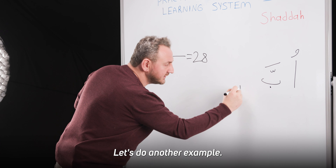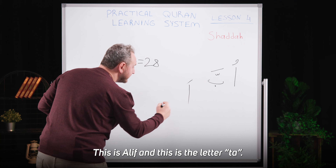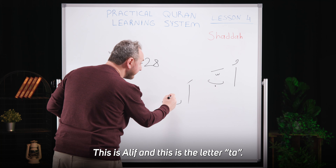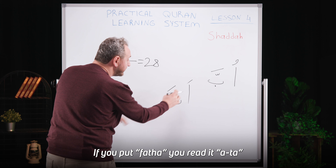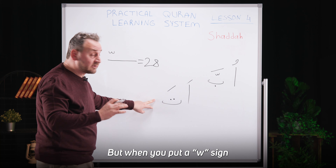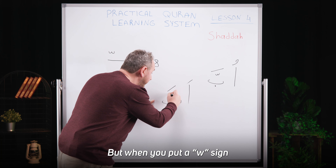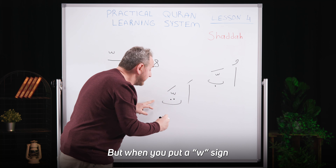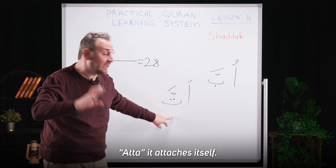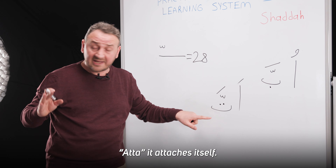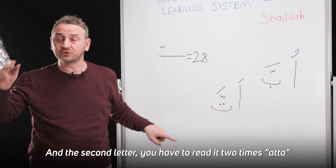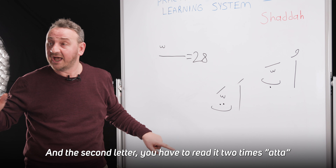Let's do another example. This is Alef and this is the letter T. If you put Fatha, you read it A-T. But when you put a W sign above the letter T, it reads A-T. It attaches itself and the second letter you have to read two times: A-T.